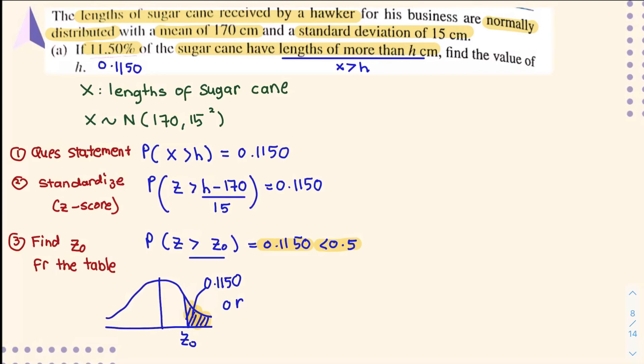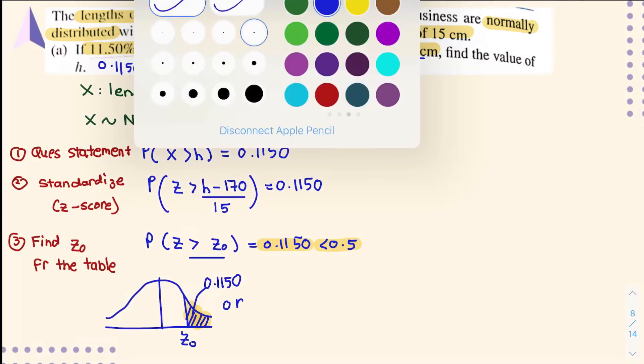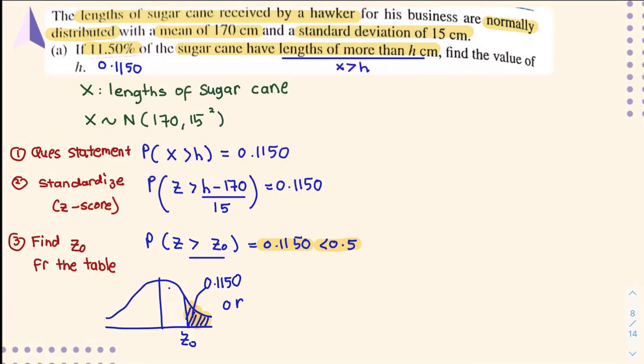But in your table, what's given is the middle region. So the middle region you have to find from the table: 0.5 (the half greater than 0) minus the tail 0.1150 equals 0.3850.